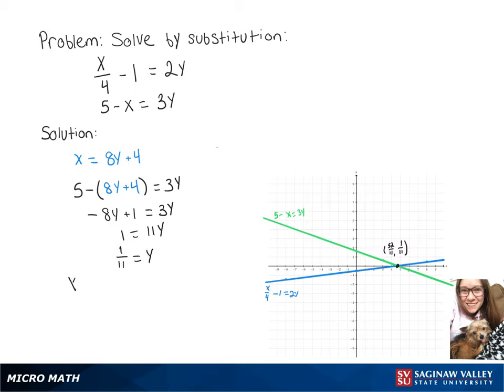Now we can take that y value and put it into our equation, so we've got x over 4 minus 1 equals 2 over 11. Adding 1 over gives x over 4 equals 13 over 11, and then multiplying both sides by 4 gives our x value x equals 52 over 11.